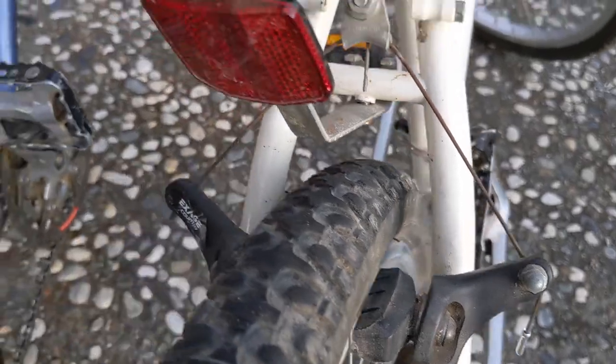Some cantilever brakes, such as this Specialized Hard Rock, allow you to change the straddle wire length by means of a bolt.